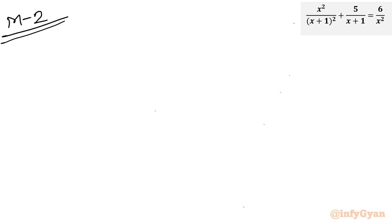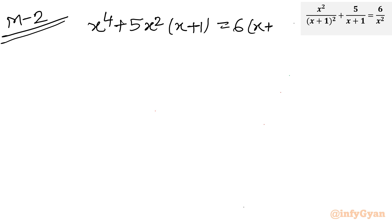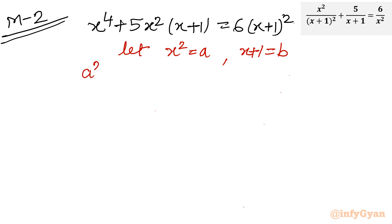Now let us consider Method 2, which is also a very interesting approach. Starting from the expanded equation x⁴ + 5x²(x+1) = 6(x+1)², I will use substitution: let a = x² and b = x+1. The equation becomes a² + 5ab = 6b². Then adding ab to both sides for algebraic manipulation: a² + 6ab = 6b² + ab.